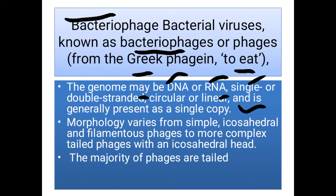The morphology of the bacteriophage varies from simple icosahedral and filamentous phages to more complex tail phages with an icosahedral head. It means that bacteriophage virus morphology varies — there may be simple viruses, the capsid may be icosahedral, there may be filamentous phages having a tail. These are tail phages and they also have an icosahedral head. The majority of phages are tail phages.